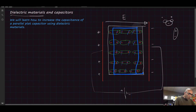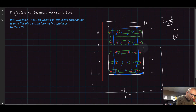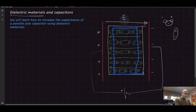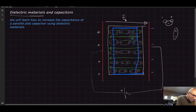After the middle charges cancel each other, what is left is a positive surface on one side of the slab and a negative surface on the other side. Since we have a positive side and a negative side arranged this way, we can draw an electric field from the positive side to the negative side — this is an electric field. I'll call the original electric field E₀ and the electric field created by inserting the dielectric slab E₁.